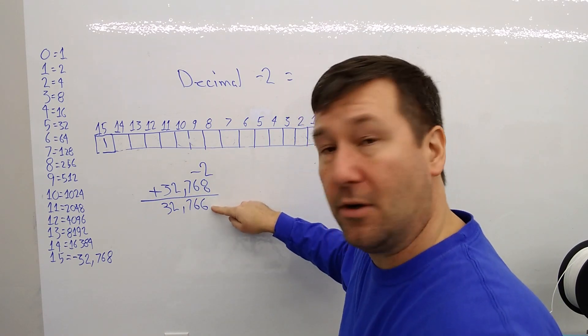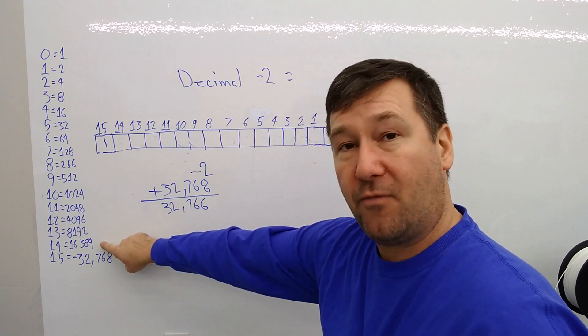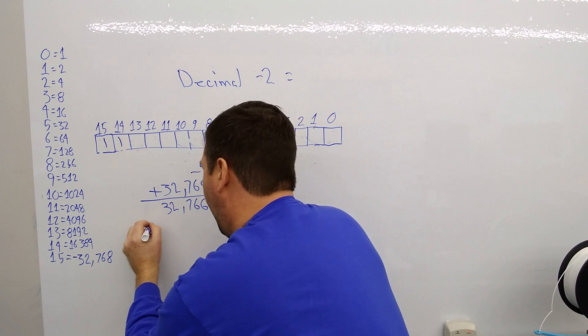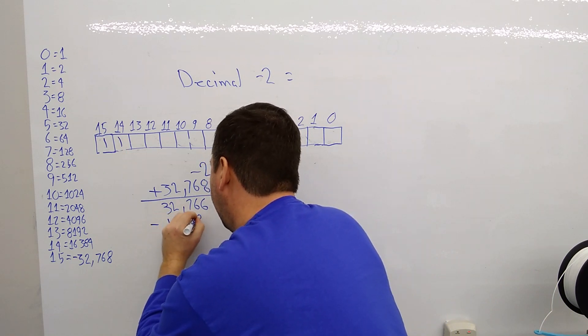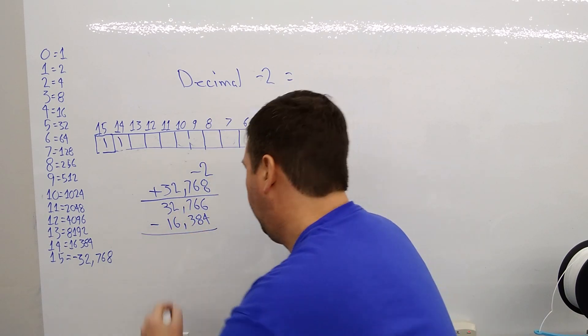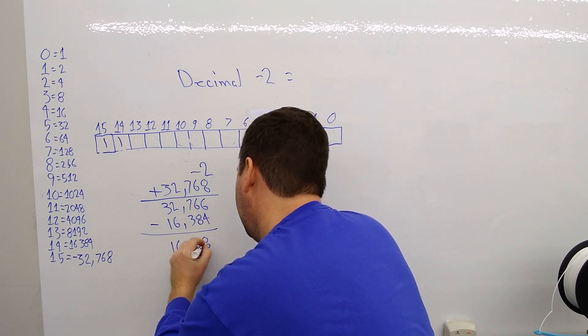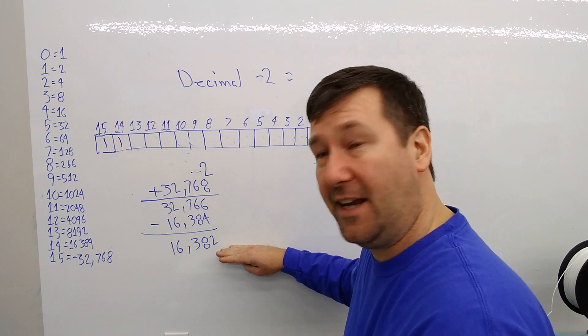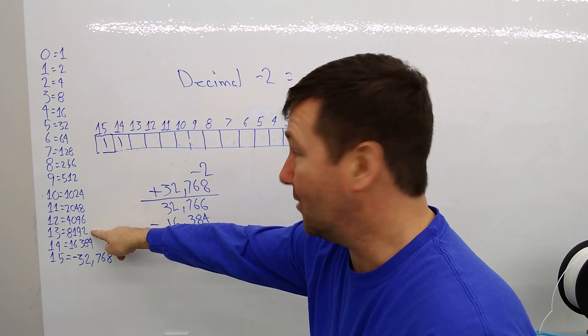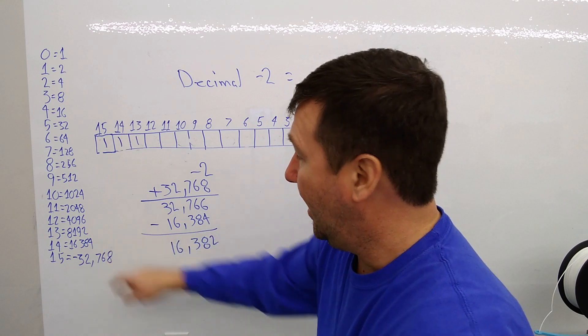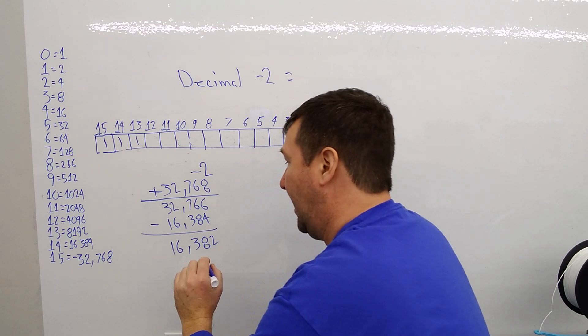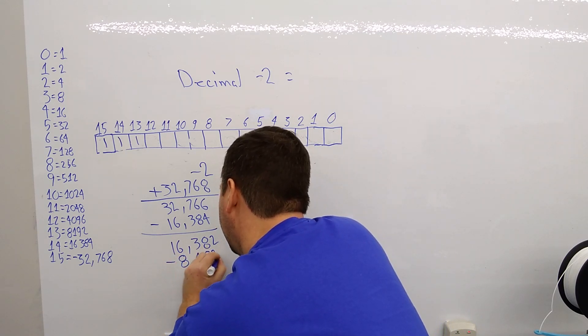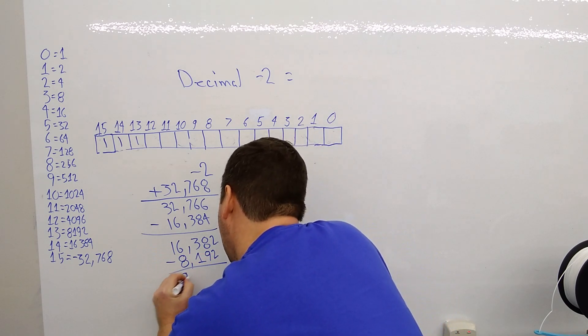So we're going to do minus a negative 32,768. When you subtract a negative number, that turns this into a plus sign. So we're left with minus two plus 32,768, and that's going to equal 32,766. Now we want to find the next largest number to this without going over, and that's going to be bit 14 at 16,384. So I'm going to put a one in bit 14's value, and I will put minus 16,384. We're going to do that math, and that will equal 16,382.